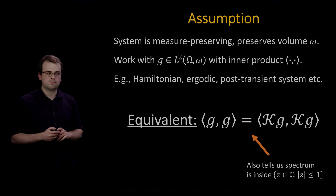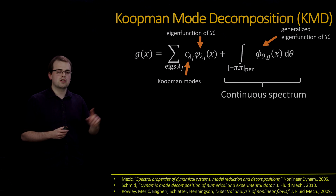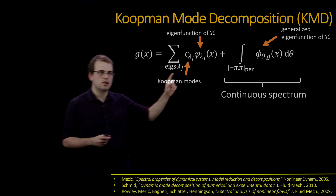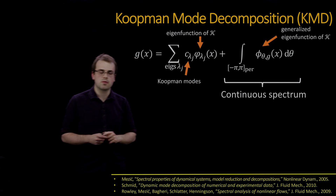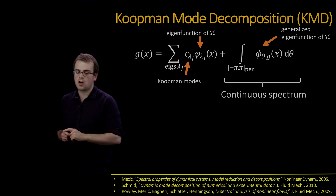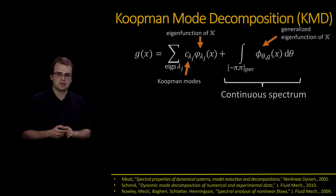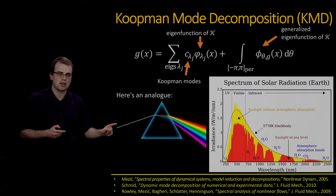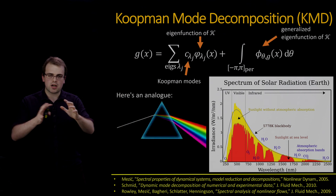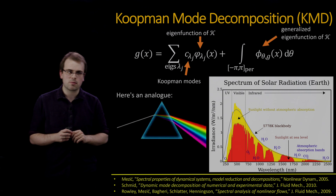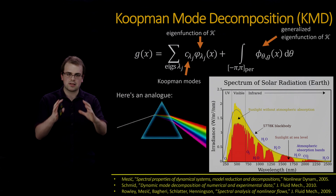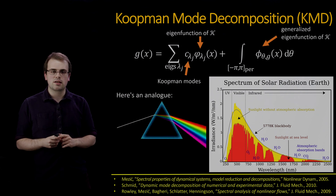Why is the Koopman operator useful? You have the Koopman mode decomposition, which splits an observable g into a sum of eigenfunctions — whose coefficients are Koopman modes — and a continuous spectrum, an integral over generalized eigenfunctions. A good analogy: placing white light through a prism splits it into different wavelengths. Here we split g into simpler parts, and we know how each part behaves under the dynamics, allowing us to piece them together to understand the whole.